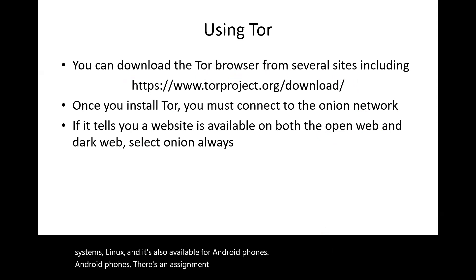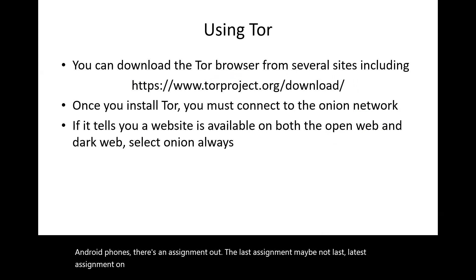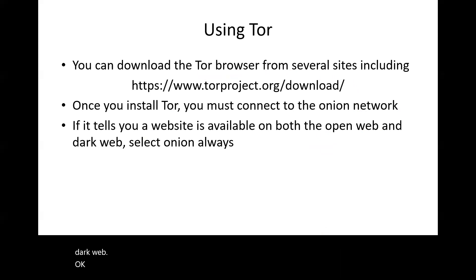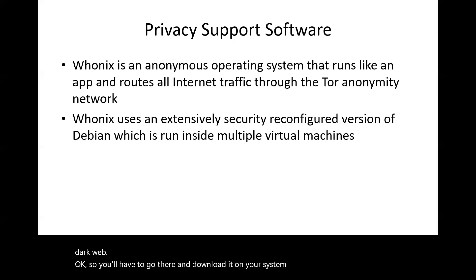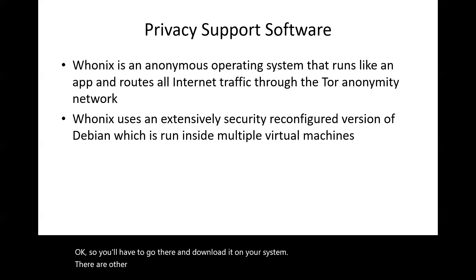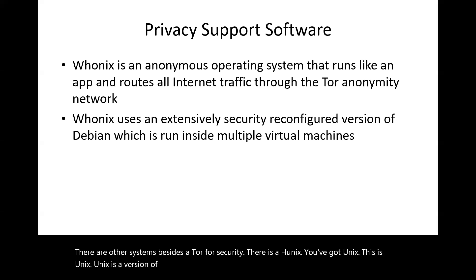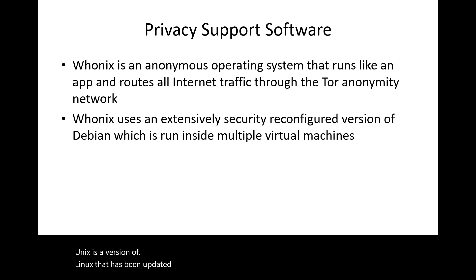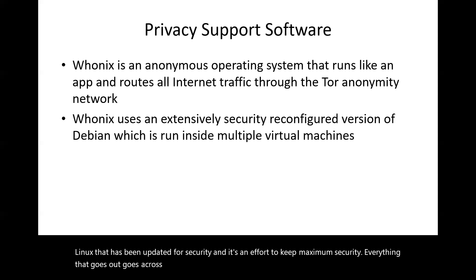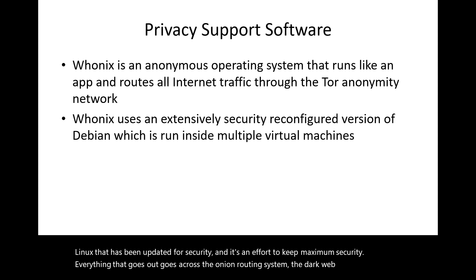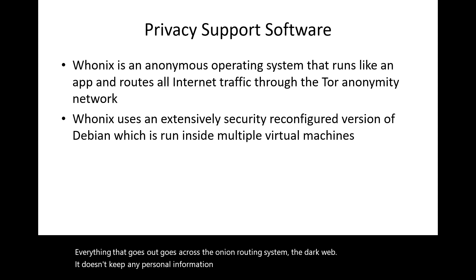There's an assignment posted on Blackboard that requires you to go out and look at the dark web. You'll need to download the Tor browser to do it. There are other security-focused systems besides Tor, including Whonix — a version of Linux updated for maximum security, where everything routes through the Onion routing system. It doesn't keep or reveal any personal information.